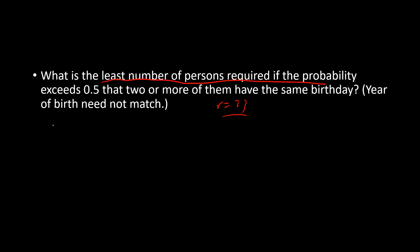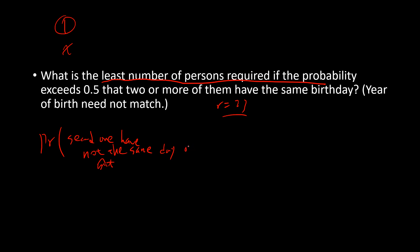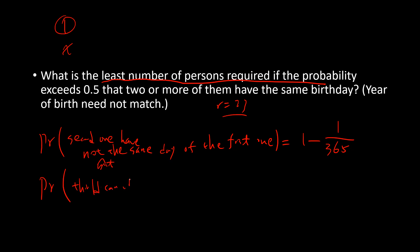Suppose the first person has some birthday. The second person has a probability of not sharing the same birthday as the first — that's (1 − 1/365). The third person cannot have a birthday the same as either the first or second, so the probability is (1 − 2/365).